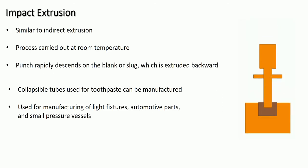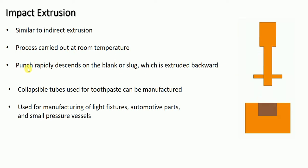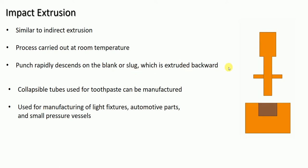In this video we are going to learn about the impact extrusion process. Impact extrusion is similar to the indirect extrusion process we have seen previously. It is generally carried out at room temperature. The punch rapidly descends on the blank or slug, which is then extruded in the backward direction.